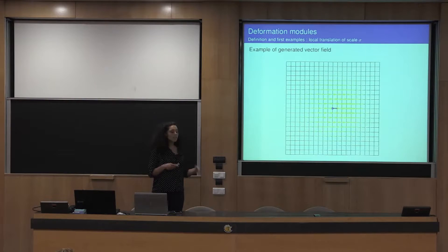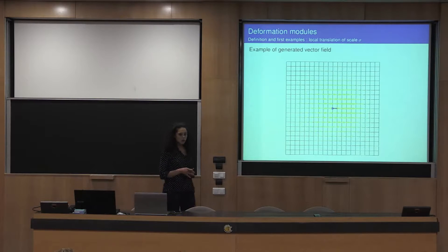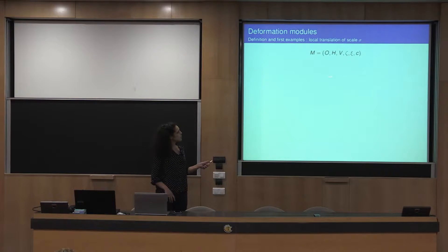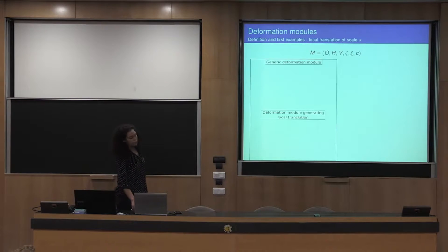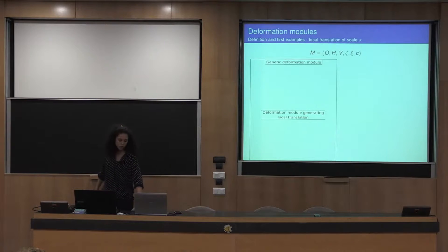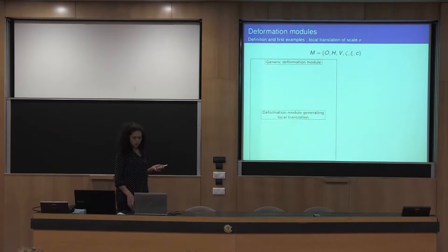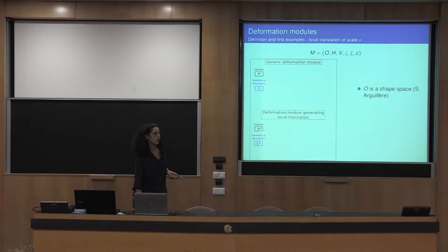I will give at the same time the example of a deformation module that creates a vector field that is always a local translation. A deformation module is a six-fold, composed of three spaces and three functions. I will give their particular roles through the form of a diagram — at the top the diagram for a generic deformation module, and at the bottom the one for the example of a deformation module generating a local translation. A deformation module can generate a vector field parametrized by two elements: first, a geometrical descriptor, and second, a control.